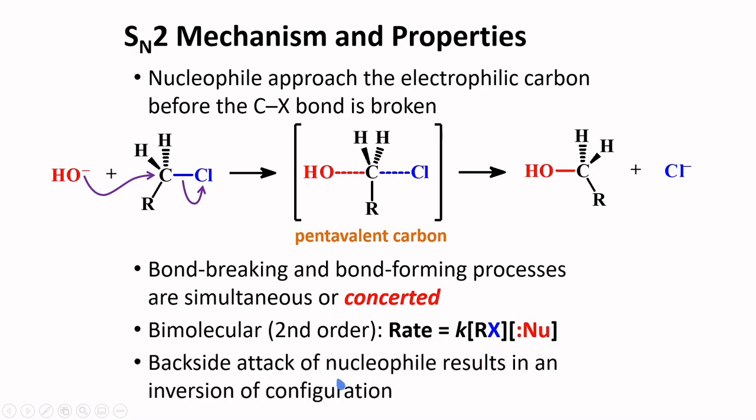The backside attack of the nucleophile results in an inversion of configuration. And so, in SN2 mechanism, stereo control of the reaction is possible. For example, in a structure such as this, an SN2 attack by the hydroxide will reverse the stereochemistry of this carbon and transform this compound from cis to trans.